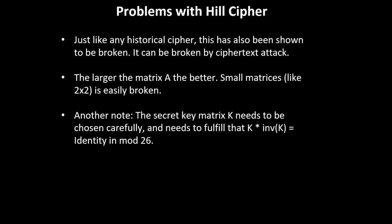The problems with the Hill cipher: just like any historical cipher, and probably the ones we use today will be broken in the future, all historical ciphers have been shown to be broken. This one can be broken by ciphertext attack. I won't go into details on how you break the Hill cipher, but I might link some articles. The larger the matrix A, the better. Small matrices like 2x2 are easily broken. Another note: the secret key matrix K needs to be chosen very carefully and needs to fulfill that K * inv(K) = Identity in mod 26.